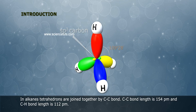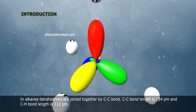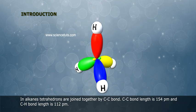In alkanes tetrahedrons are joined together by C-C bond. C-C bond length is 154 pm and C-H bond length is 112 pm.